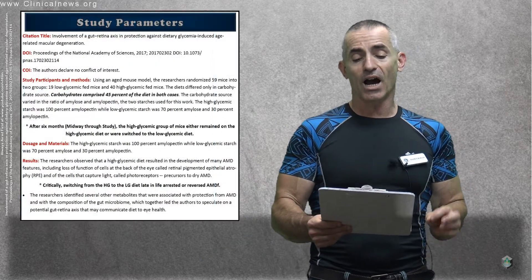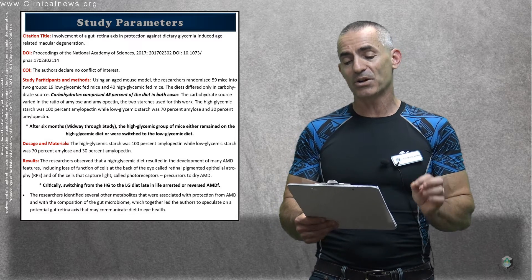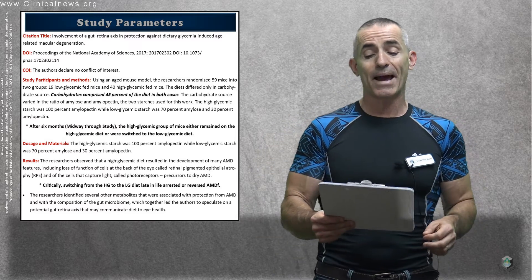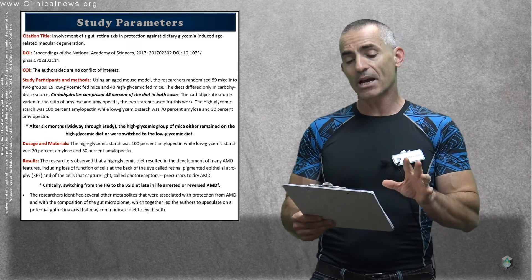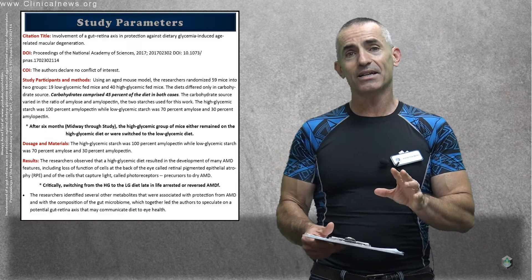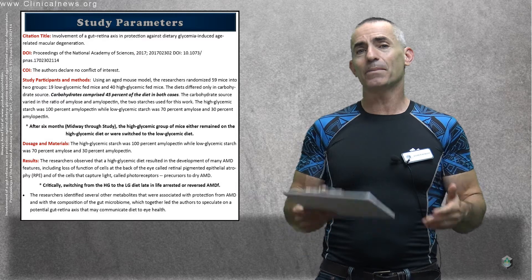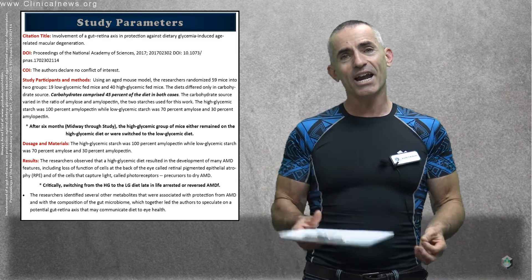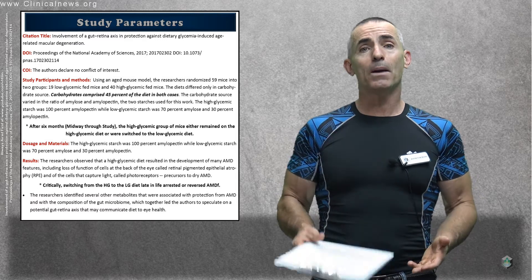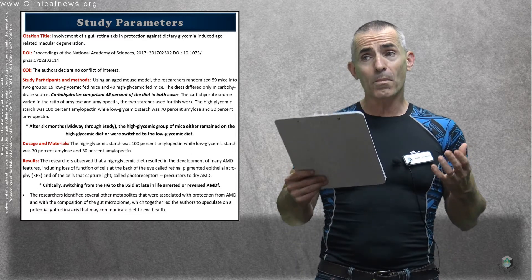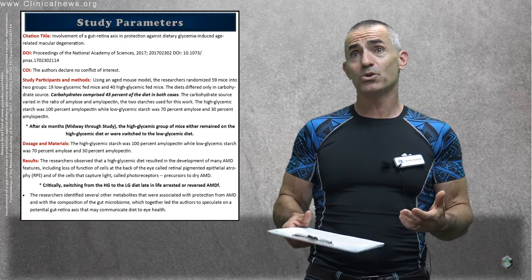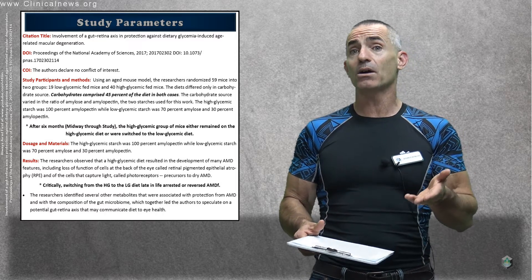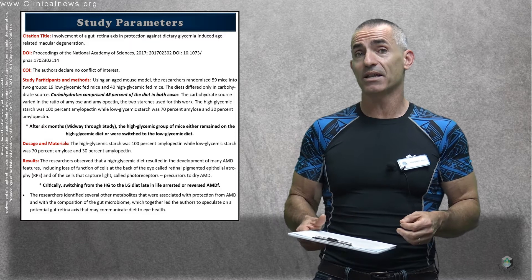Involvement of a gut-retina axis in protection against dietary glycemia-induced age-related macular degeneration. You heard that part right, gut-retina axis. They discovered that something happened when they went from a high-glycemic diet to a low-glycemic diet, which changed the composition of the gut bacteria from a form in the high-glycemic diet, which tends to encourage a nasty form of bacteria to be a little higher and potentially have impact in the eyes.